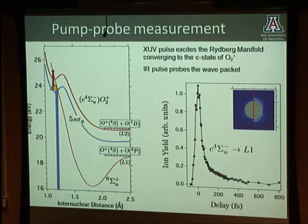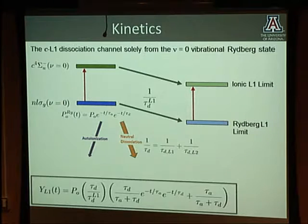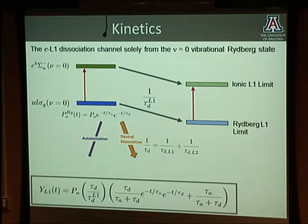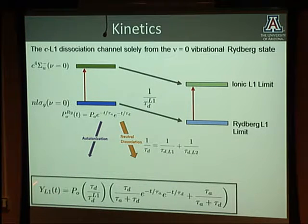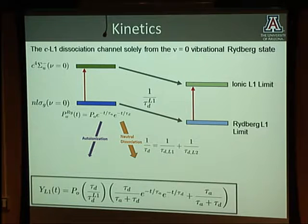If we model this data, we can understand what the various rates are. There is a kinetic model based on the autoionization rate, the dissociation rate, and the probing step. The yield as a function of time depends on the ratio between the dissociation rate and the autoionization rate.